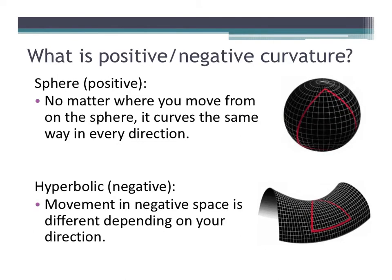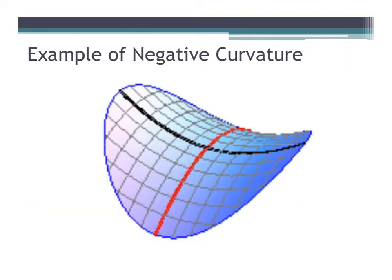If you're talking about positive curvature, then no matter where you are on the sphere, it curves the same way in every direction. Hyperbolic geometry is an example of negative curvature, and negative curvature means that movement in negative space is different depending on your direction. So let's take a look at the saddle, which is an example of negative curvature.